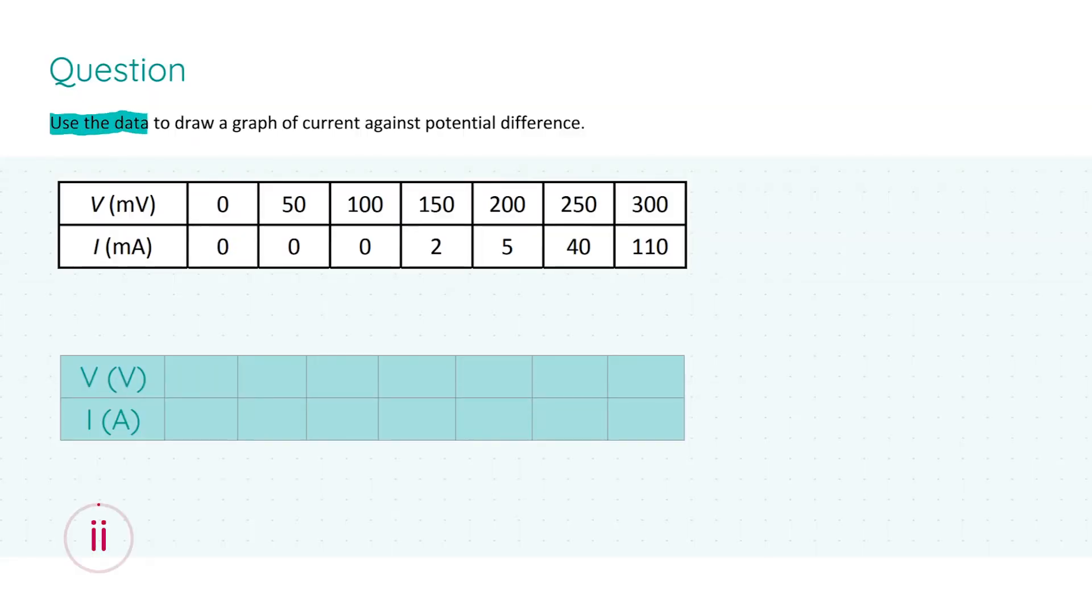Next we're to use the data to draw a graph of current against potential difference. Before I do anything, I want to convert all of my values which are presented in millivolts and milliamps into volts and amps for SI units. The reason I'm doing this is to make everything explicitly clear. When you have to change values in the data table, I'd always draw out a new data table—copy the table into your solution booklet and re-input those values. The conversion from millivolts to volts or milliamps to amps is that you divide by a thousand.